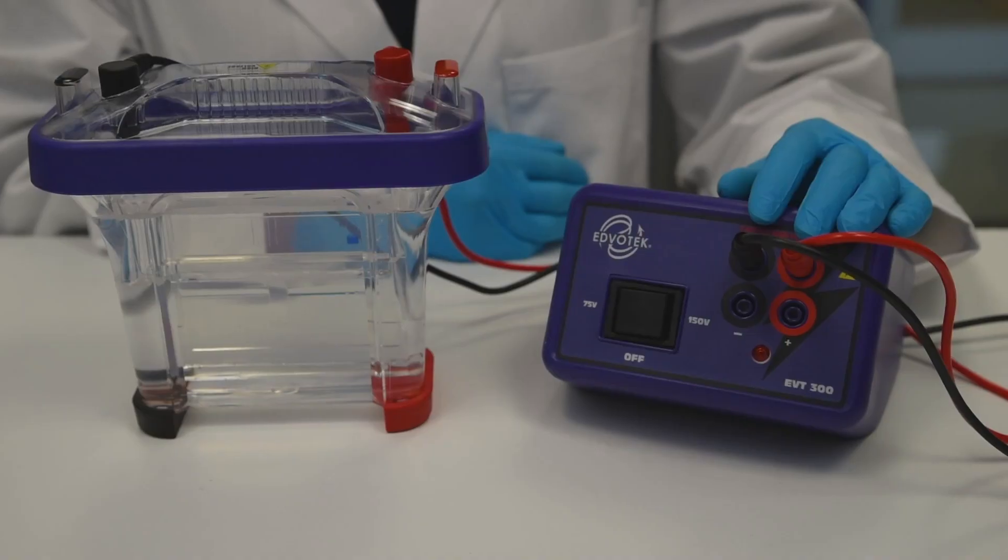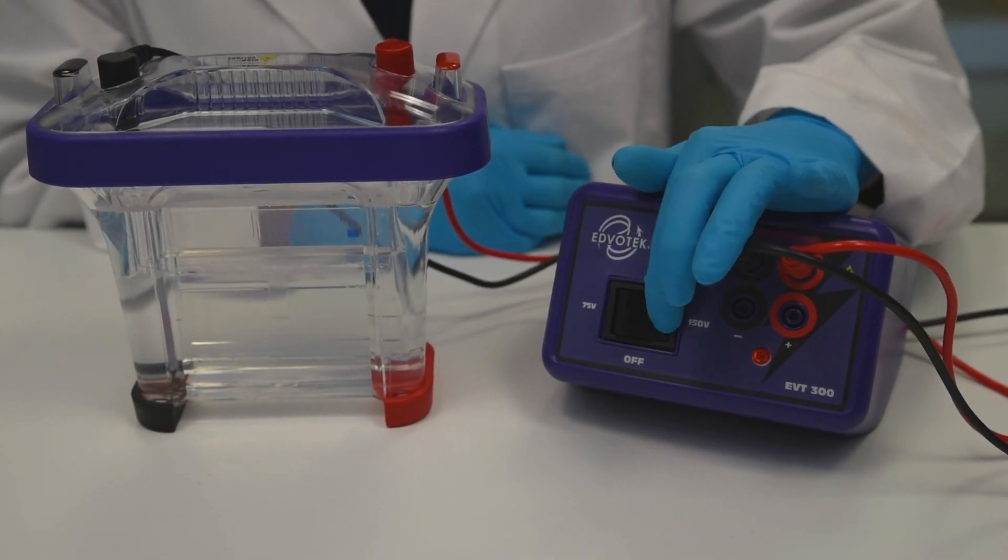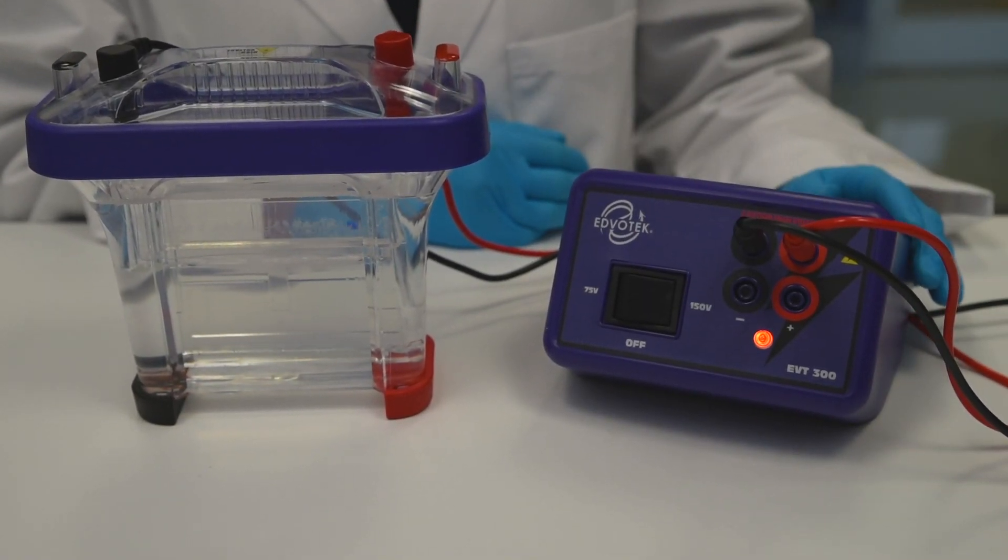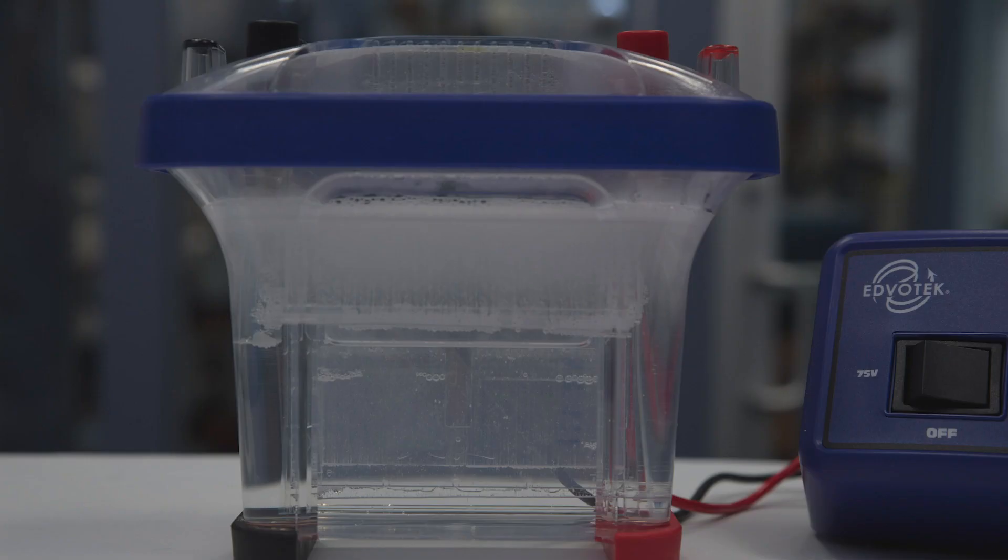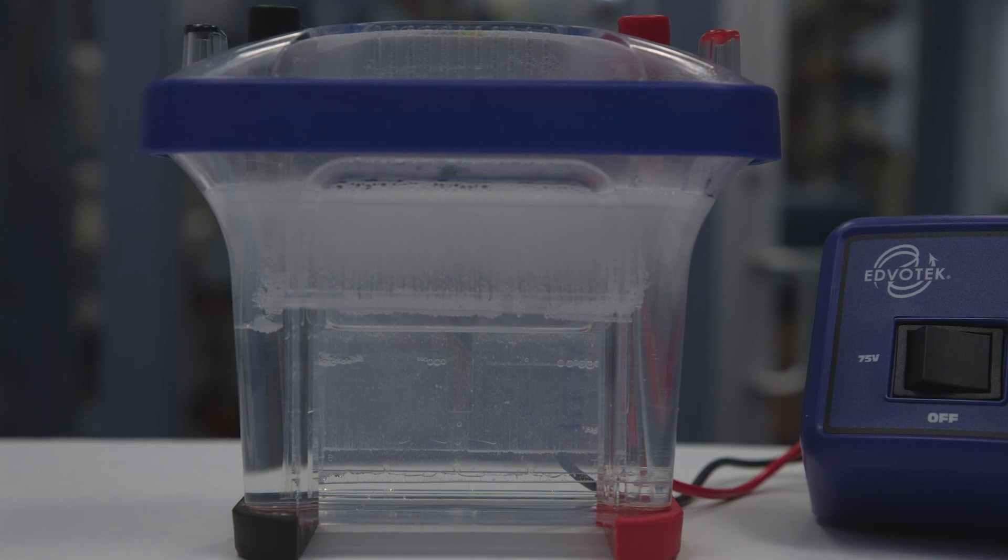Step 7: Set the voltage of the power supply and perform electrophoresis. Allow the proteins to separate through the gel for the recommended length of time, or until the tracking dye reaches near the bottom of the gel.